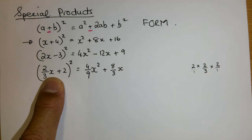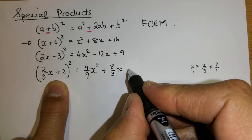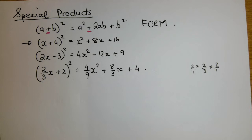There's a plus there. So my middle term is plus 8 over 3x. My last term will be this 2 that is squared. And that gives me a 4.